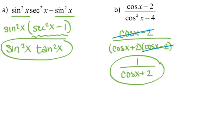One problem people encounter with this section is they don't know when to stop simplifying. Since you can have more than one answer, I'd suggest simplifying for a couple of steps, and then if you don't think you can go any further, circle it and say you're done.